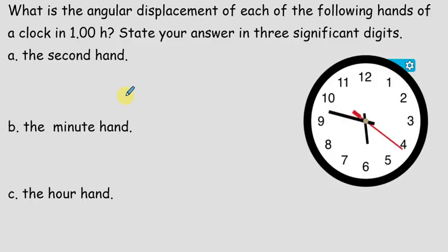What is the angular displacement of each of the following hands of a clock in one hour? State your answer in three significant digits. So, during one hour, we are looking for the angular displacement done by these three hands, the second hand, the minute hand, and the hour hand.